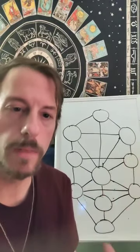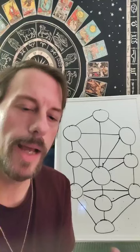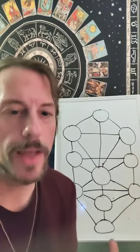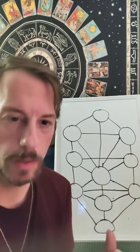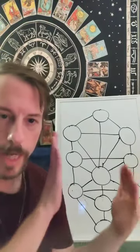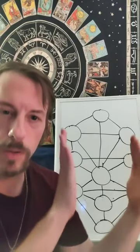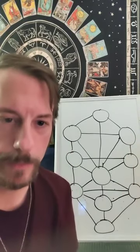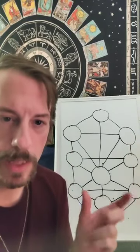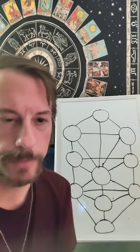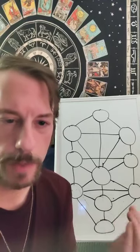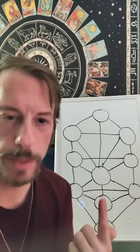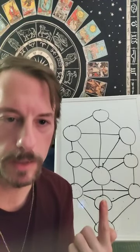So does the middle column. The middle path is the way of mysticism, the path of great return. These two pillars represent polarity and duality. You have the pillar of force, the pillar of form, and then the pillar of balance.